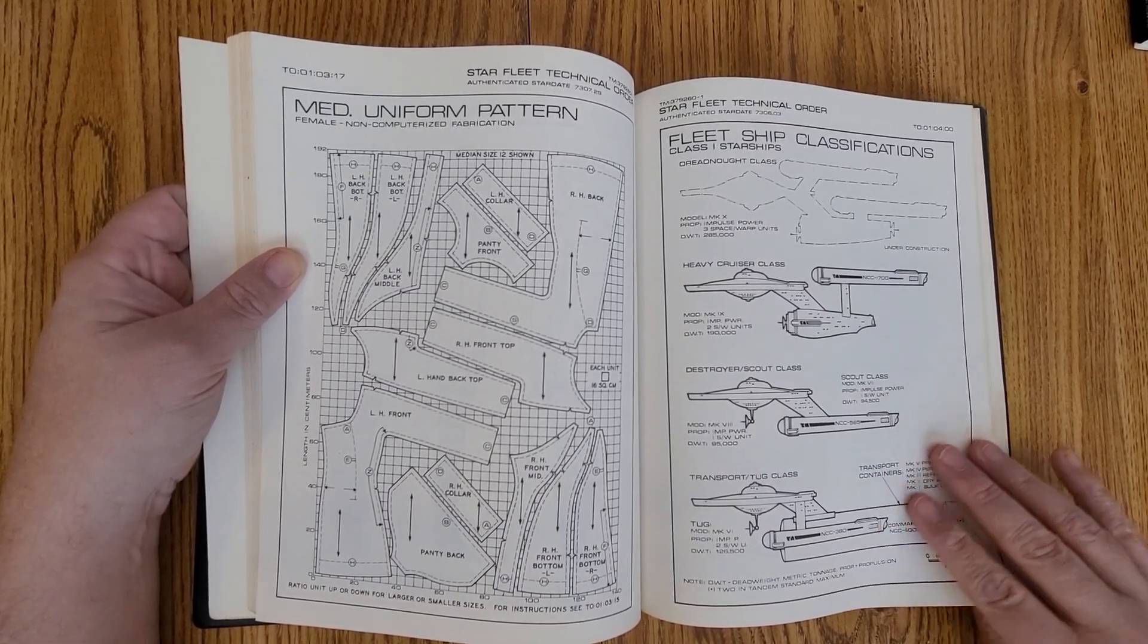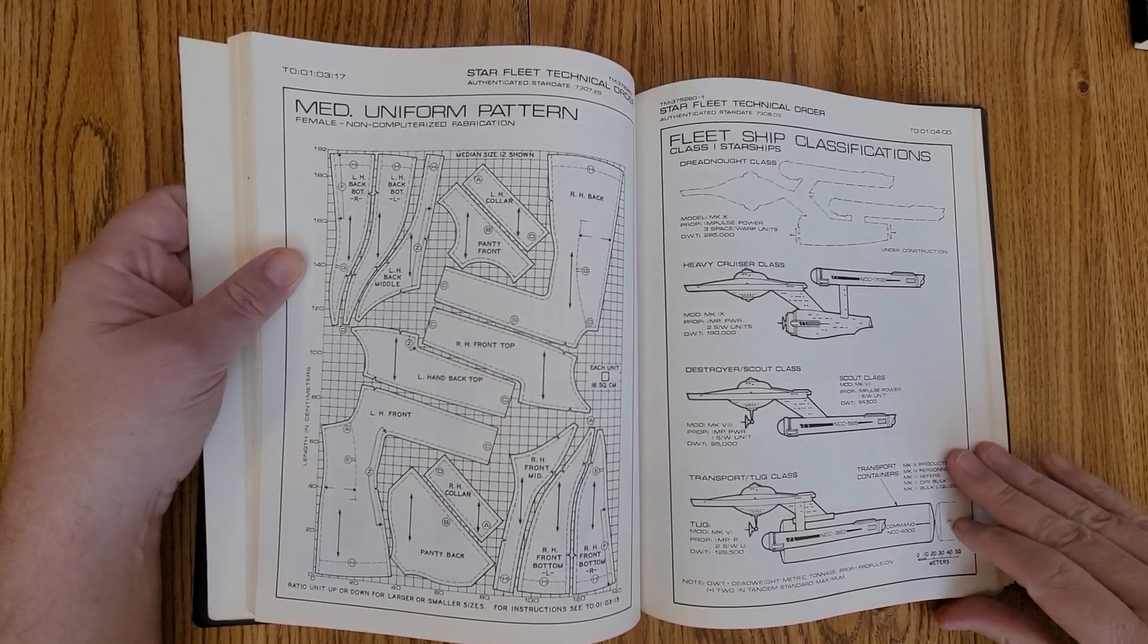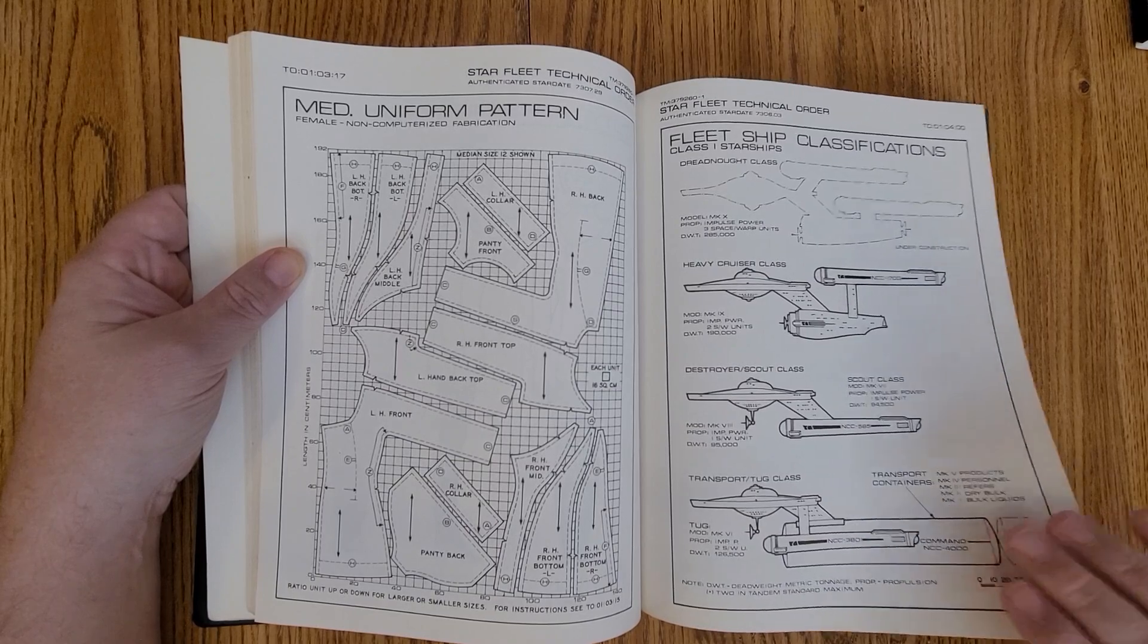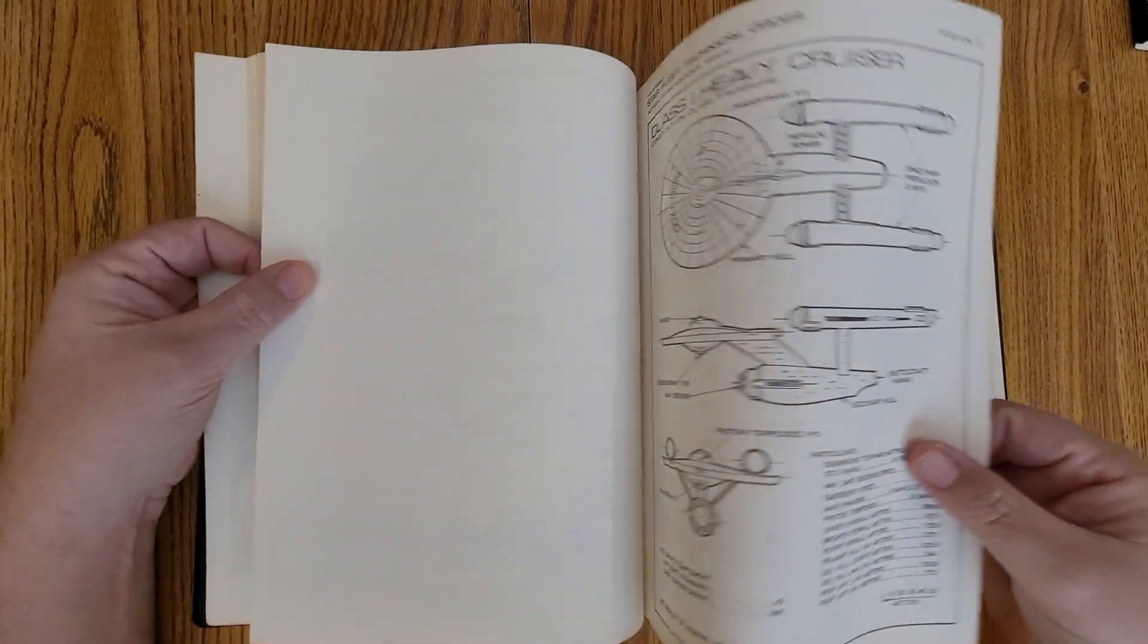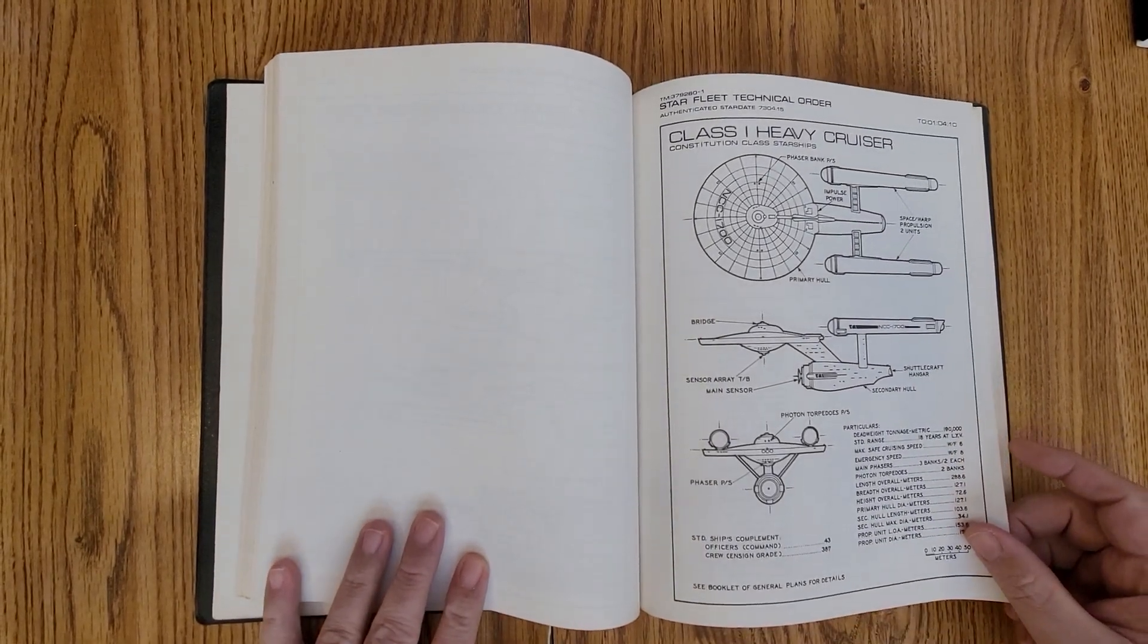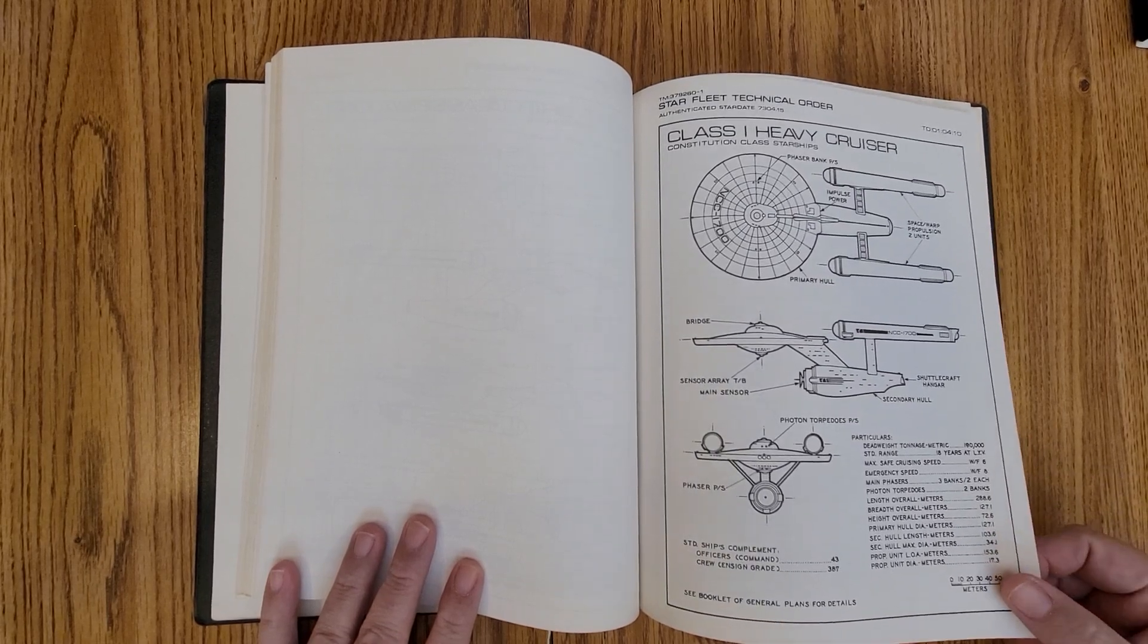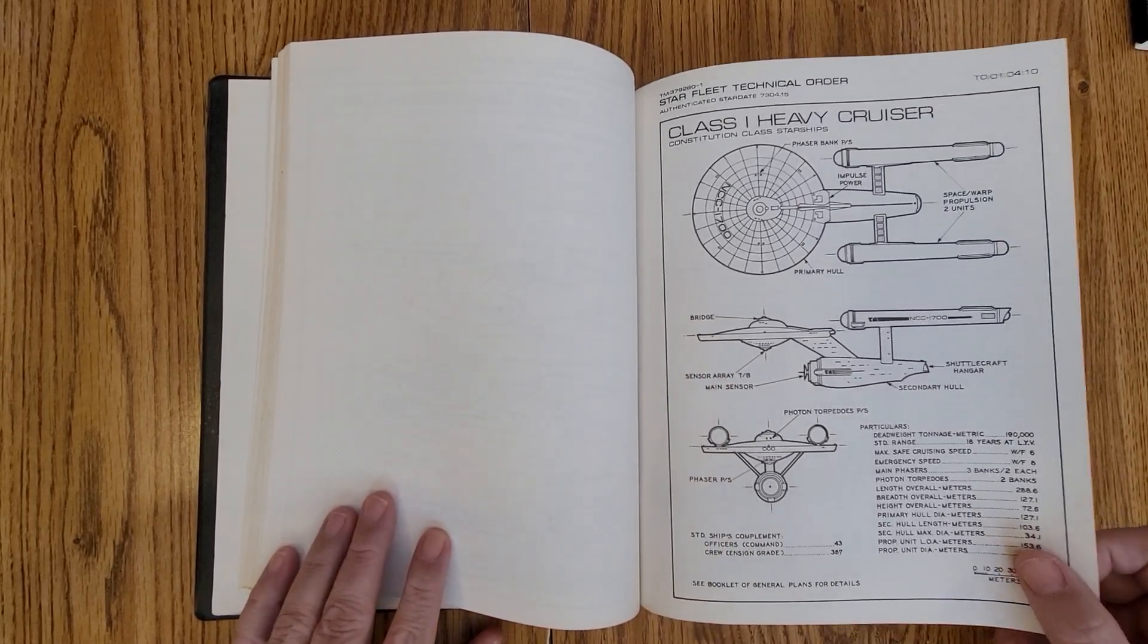There's the Destroyer, there's the Tug. And then they also had come up with the Dreadnought, which is a warship, a Mark 10 warship, which they did do a book on it, which was really cool. I love the story on it, but it never made it to the screen per se. The next generation had one.